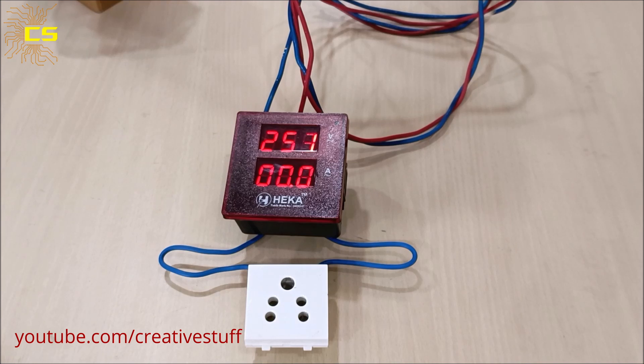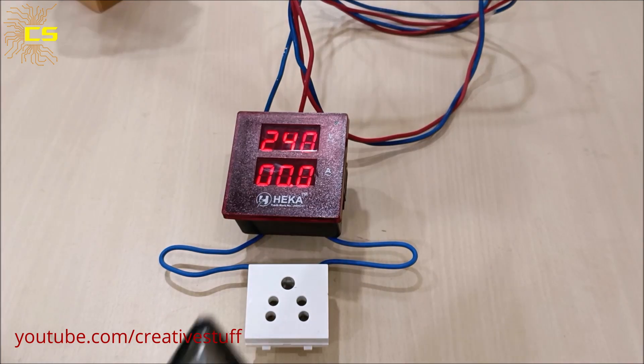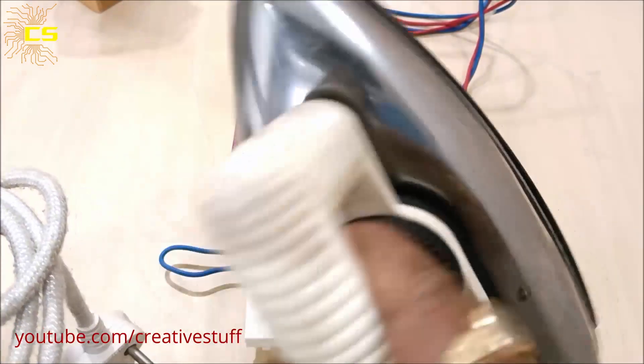As you can see, we are getting reading in the voltage meter, but zero in the amp meter. We have to connect a load to get the ampere reading. So I have used this press iron here.